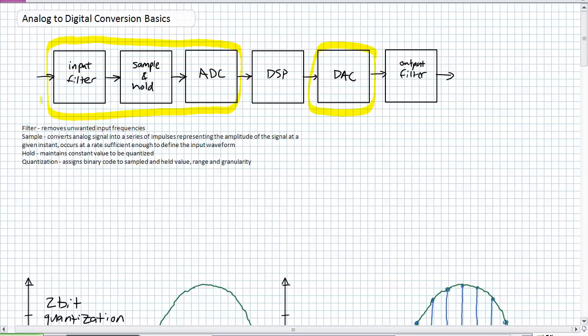The sampling rate occurs at a rate sufficient enough to define the input waveform. So remember our Nyquist sampling theorem discussion, you've got to at a very minimum sample it at twice the frequency of the highest frequency you wish to capture.